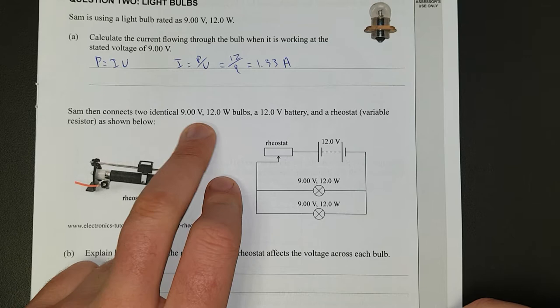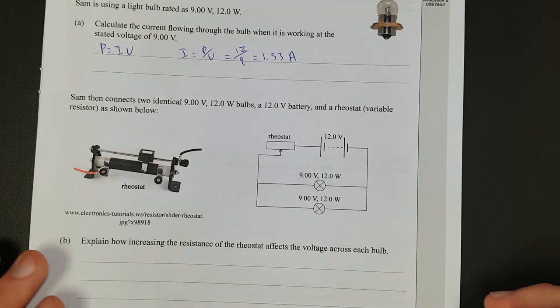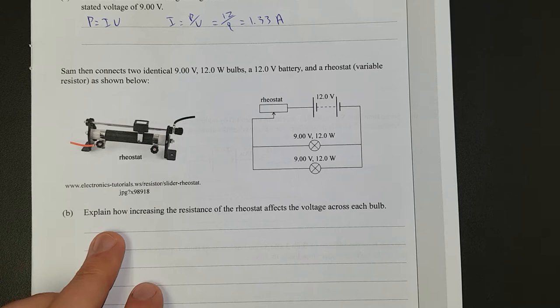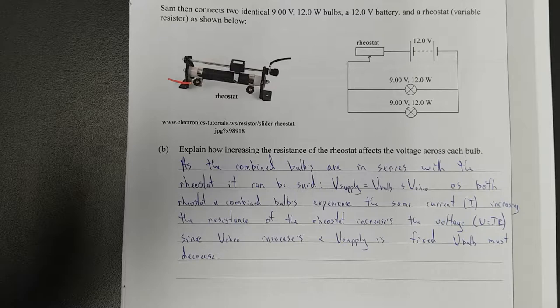Sam then connects two identical 9 volts 12 watt bulbs and a 12 volt battery and a rheostat. Rheostat, variable resistor or a potentiometer if you're American, as shown below. Explain how increasing the resistance of the rheostat affects the voltage across each bulb. So I'm going to pause the video, write down the answer and then discuss it.